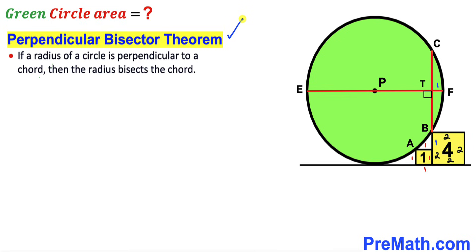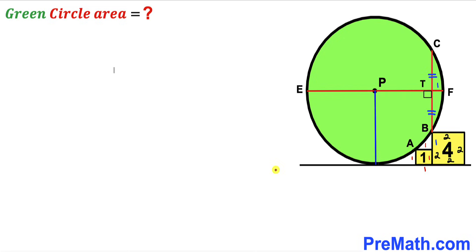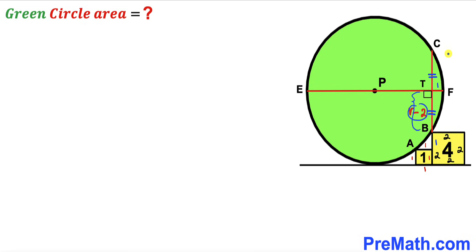Recalling the perpendicular bisector theorem: if a radius of a circle is perpendicular to a chord, then the radius bisects the chord. So diameter EF bisects chord BC, meaning segment CT equals segment BT. Labeling the radius as lowercase r, and noting the segment length is 2, segment BT equals r minus 2, and therefore segment CT also equals r minus 2.